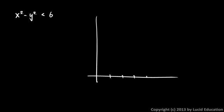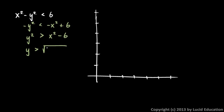x squared minus y squared is less than 6. We're going to graph this. Let's take this and subtract x squared from each side and that leaves us with negative y squared is less than negative x squared plus 6. Multiply both sides by negative 1 and we get y squared here and we get x squared minus 6 there and when we multiply both sides by a negative number, the direction of the inequality switches around. And then square root both sides and you get y is greater than the square root of x squared minus 6.